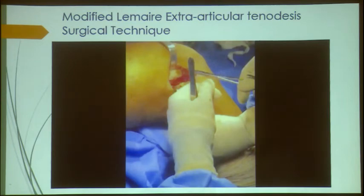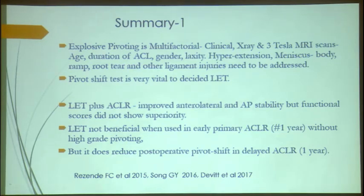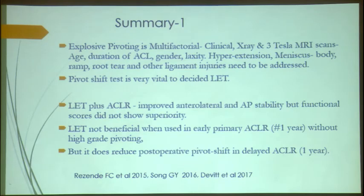In summary, excessive pivoting is multifactorial — it is not just the ALL. Clinical examination, X-rays, 3 Tesla MRI, patient age, ACL duration, gender, laxity, hyperextension, and meniscal tears — whether body, root, or ramp — all need to be addressed. The pivot shift test is vital and decides the need for LAT. LAT plus ACL-R improves anterolateral and AP stability. LAT is not beneficial in primary ACL less than one year old without pivoting, but for ACL tears more than one year old, the anterolateral complex is usually stretched out and LAT is needed.